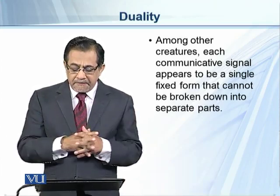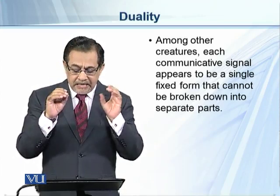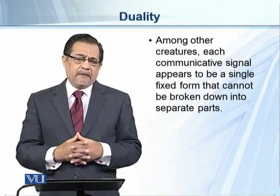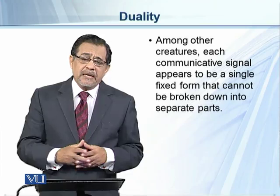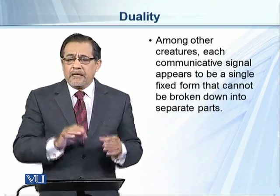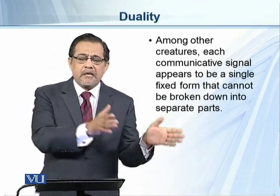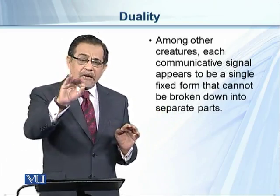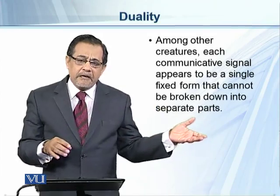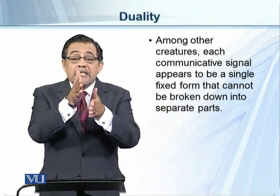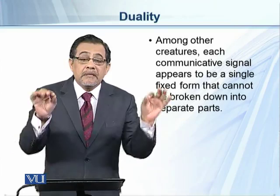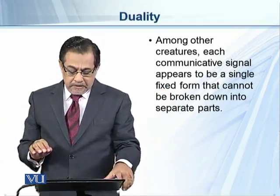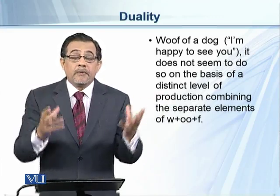Among other creatures, each communicative signal appears to be a single fixed form that cannot be broken down into separate parts. Take the roar of a lion or the barking of a dog — these are fixed forms. A chimp may have a certain number of sounds, or a bird may have a certain number of calls, but these calls are fixed. One call may have one meaning, but it cannot have a different meaning, and we cannot separate these calls into different segments as we separate a word into different sound segments.